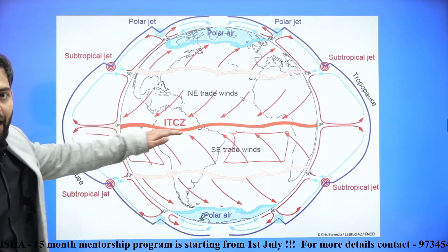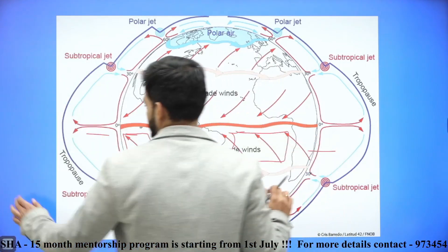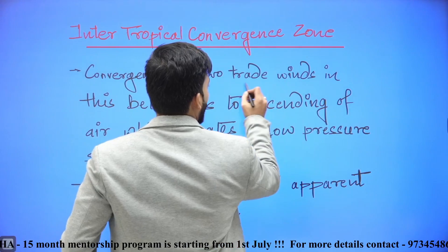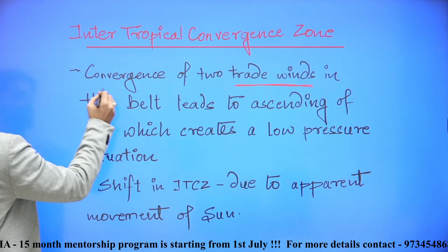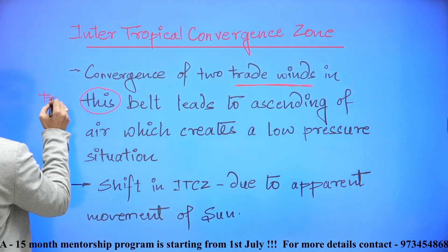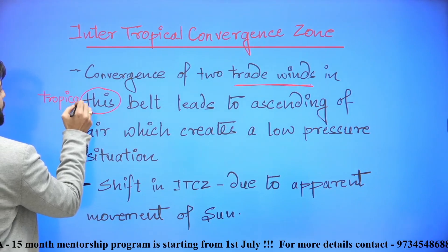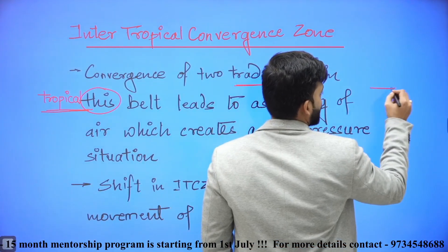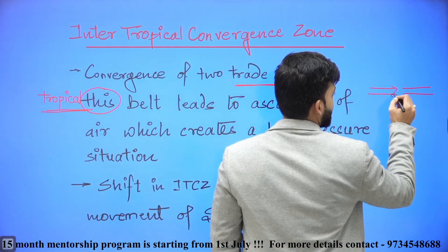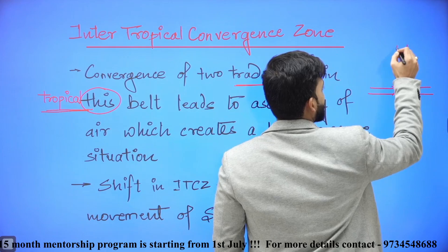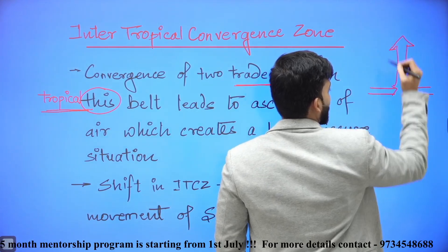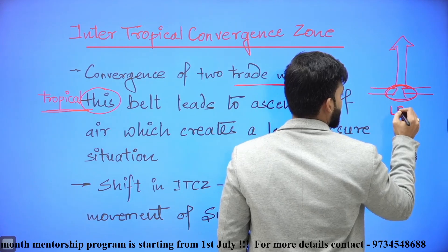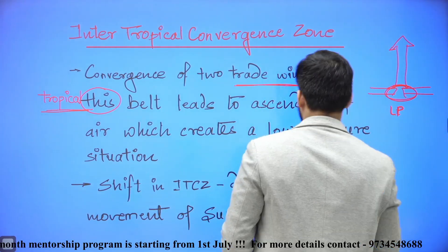Now, what is ITCZ? ITCZ is basically the Intertropical Convergence Zone. Convergence of trade winds in the tropical belt leads to ascending air — when two trade winds converge, they ascend and move upward in the atmosphere. Thus, a low pressure zone will be created near the convergence at the surface.